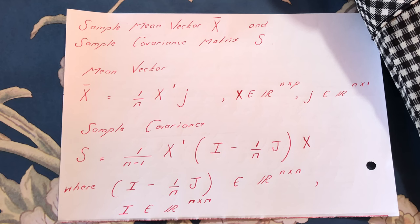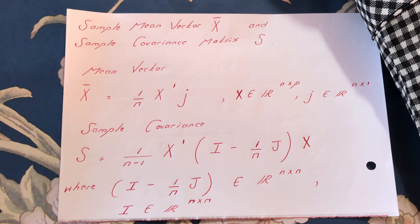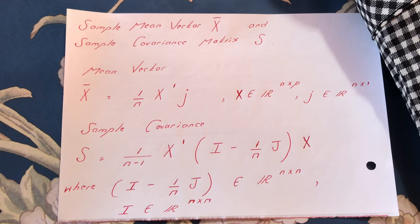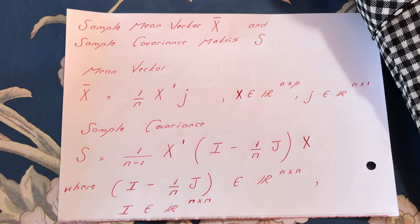We are going to use matrix algebra to find x-bar and S. The formula for the mean vector is x-bar equals 1 over n times X-transpose times j, where n is the number of observations, X-dash is the transpose of matrix X, and lowercase j is a vector of 1s of order n by 1.